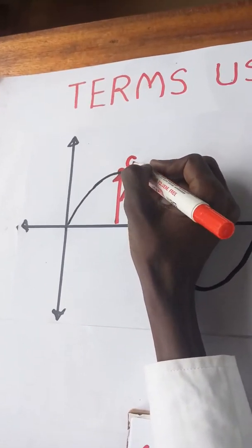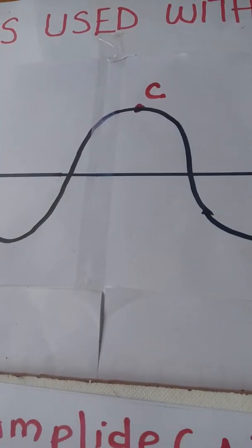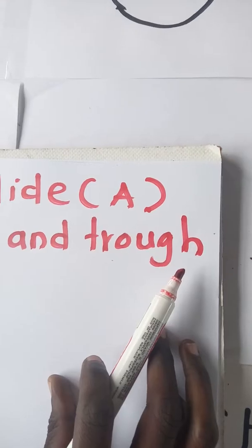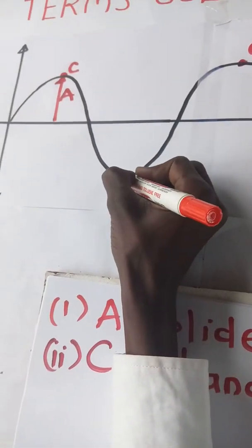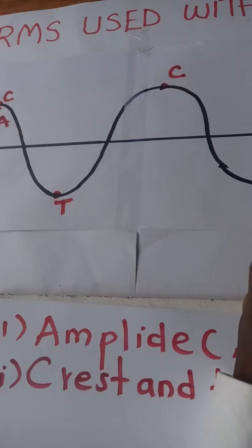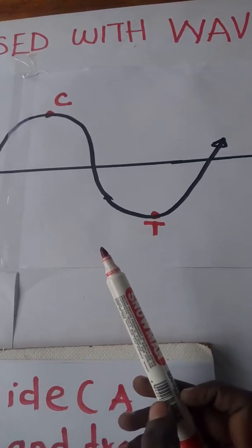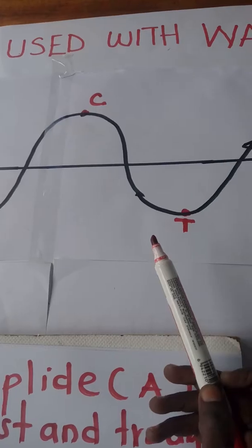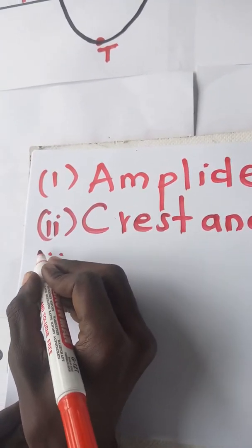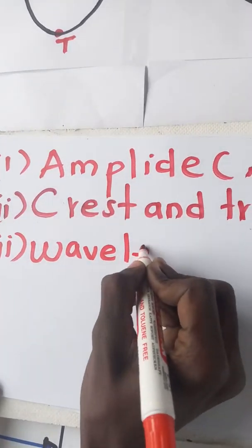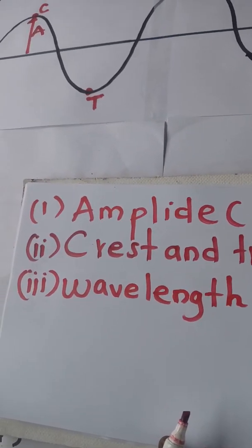We also have the terms crest and trough. The crest is the point of maximum positive displacement of a wave from the equilibrium position. If this is the equilibrium position, then this is the crest. The trough is the point of maximum negative displacement from the equilibrium position. These marked points are troughs — points of maximum negative displacement from the equilibrium position.